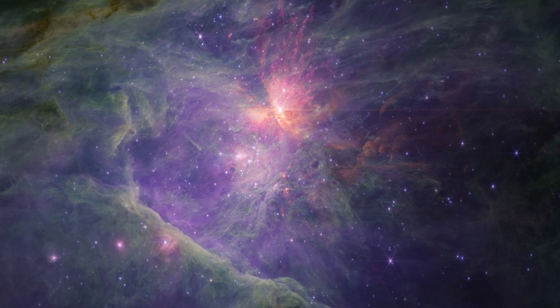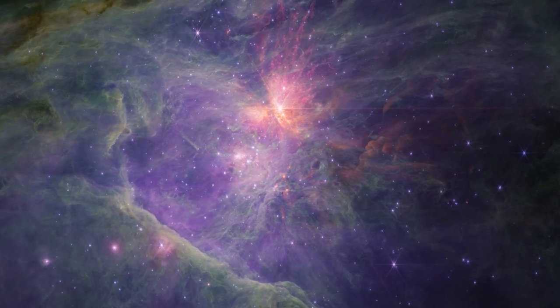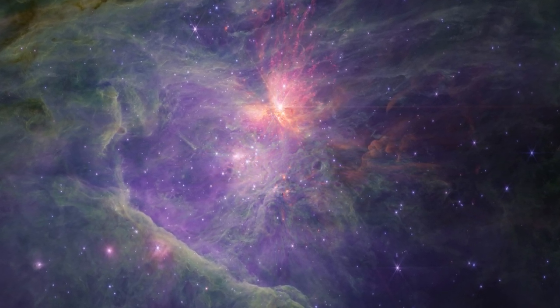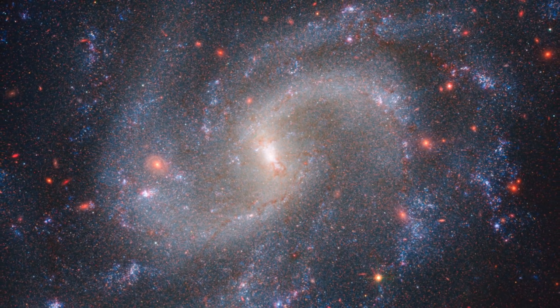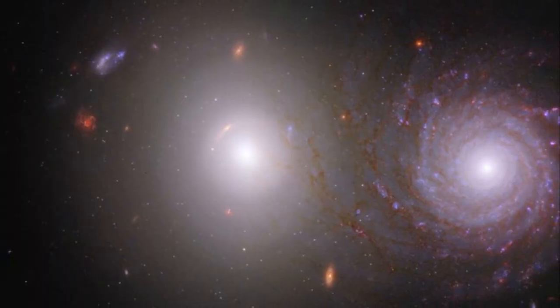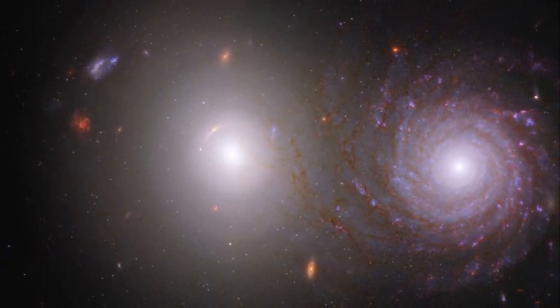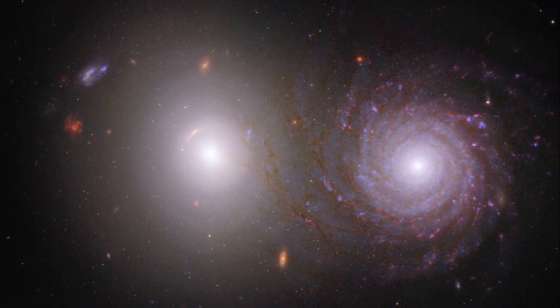These images reveal galaxies in their infancy, in the throes of formation. Some are spiral galaxies, like our own Milky Way in their formative stages. Others are irregular galaxies, still figuring out their shape. We see galaxies colliding and merging, a process that can trigger the birth of new stars.